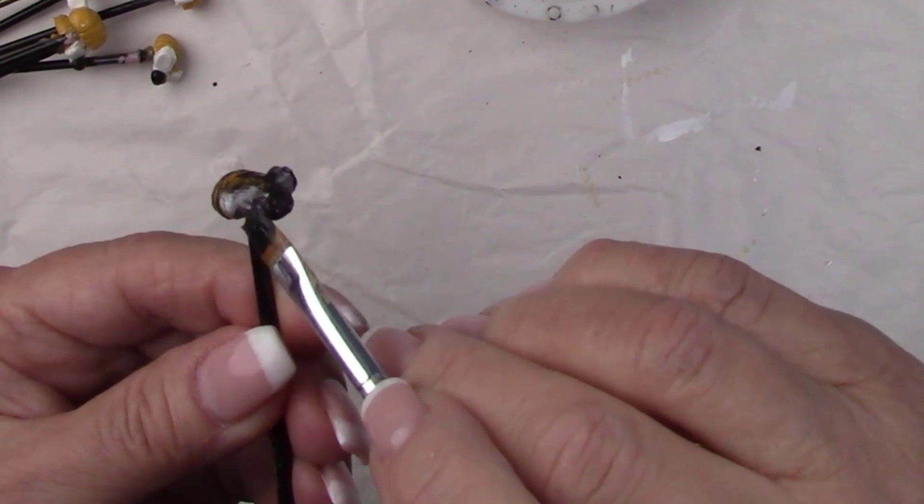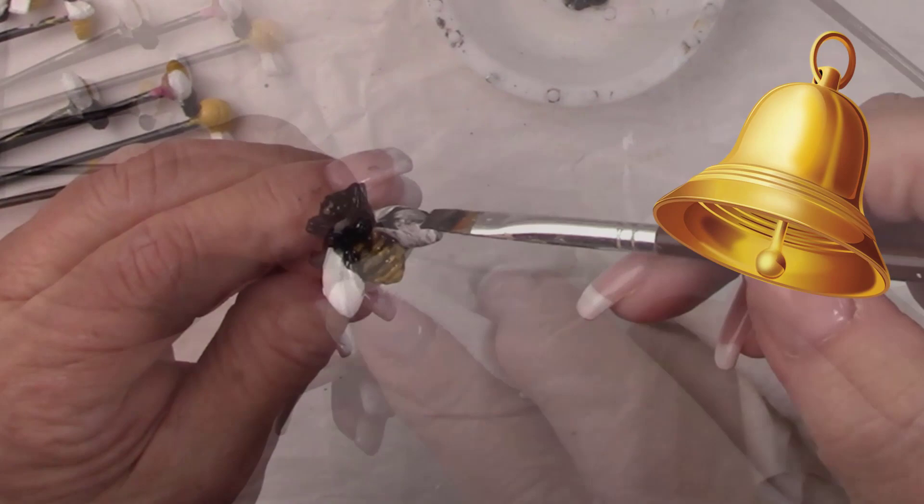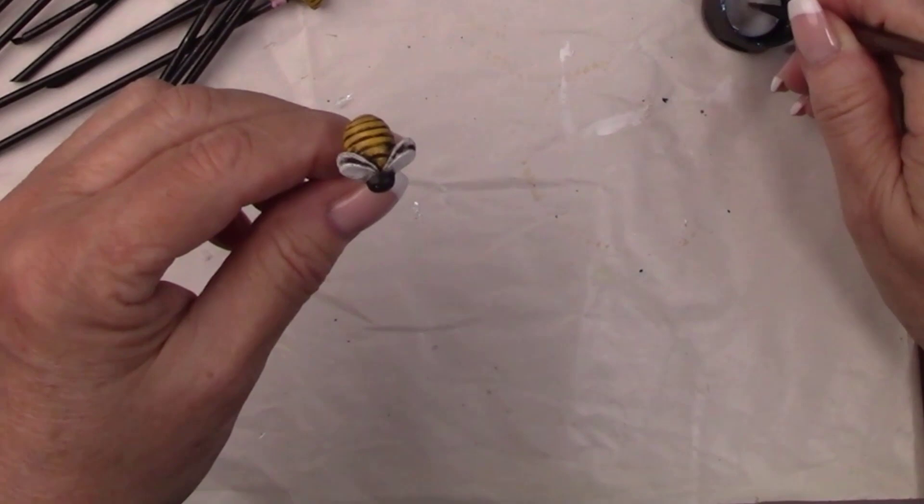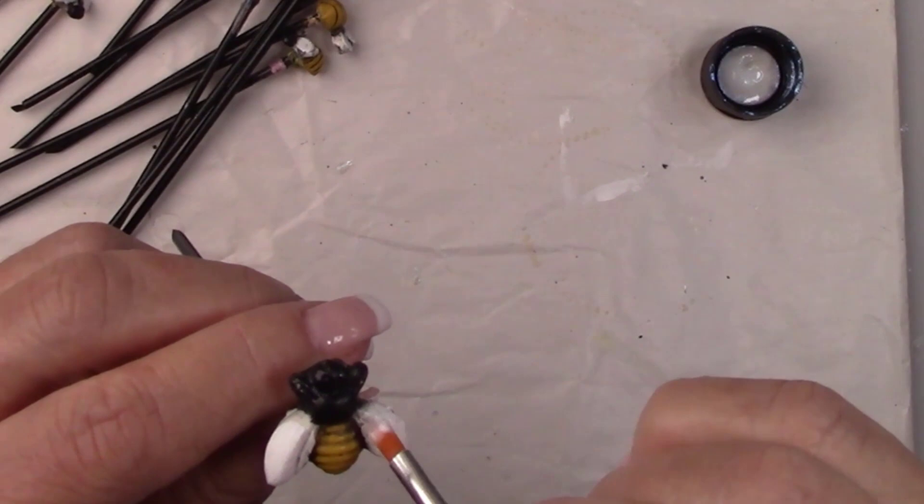Make sure you click that bell so you'll be notified anytime I upload a new video. After the antiquing dried, I added some really pretty iridescent dragonfly paint to just the wings of the little bees. I found that at Hobby Lobby. Then I gave them all a coat of high gloss spray sealer.